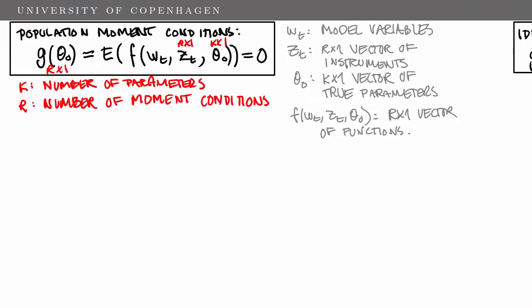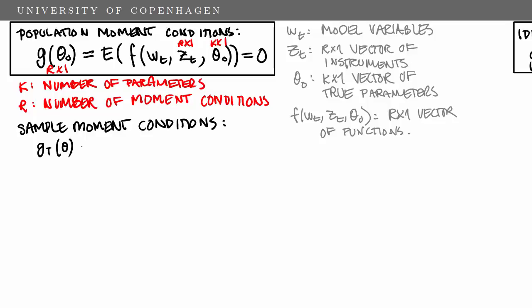In order to derive an estimator of the true parameters theta zero, we consider the sample moment conditions. We denote those g subscript capital T — to indicate we use a sample of length capital T — evaluated at theta. That is simply the sample average: one over T times the sum from t equals 1 to capital T of the function f of Wt, Zt, theta.